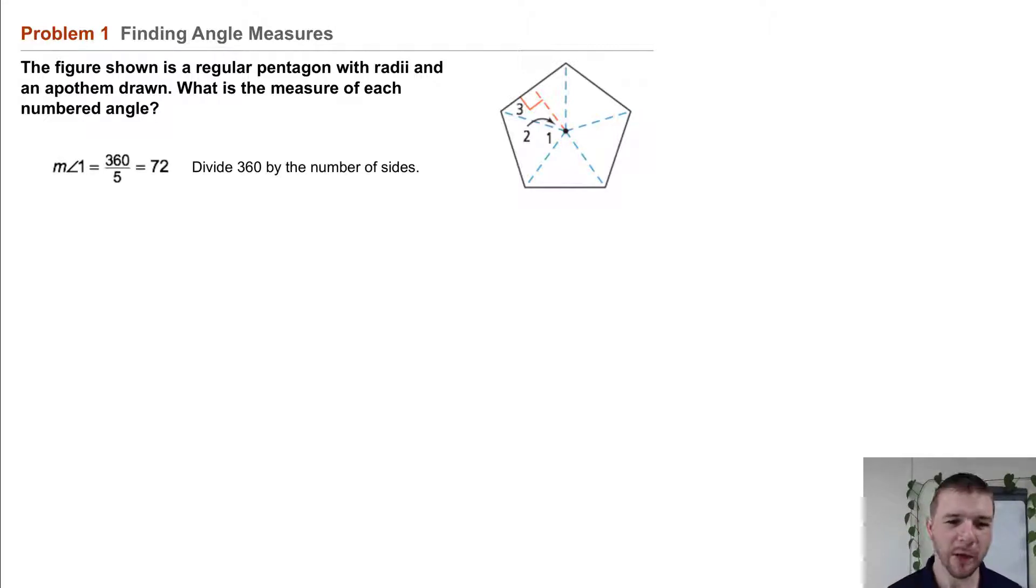The measure of angle 1 equals 360 divided by 5, 360 representing the number of degrees in a full circle, 5 representing the number of sides, also the number of interior angles in this regular pentagon. Because it's regular, all the angles are congruent, and that's 72.